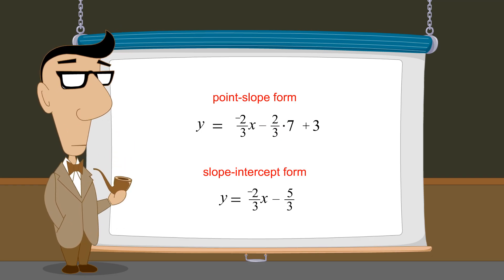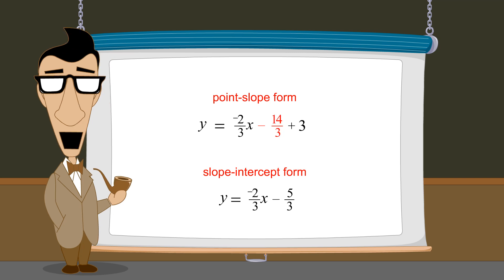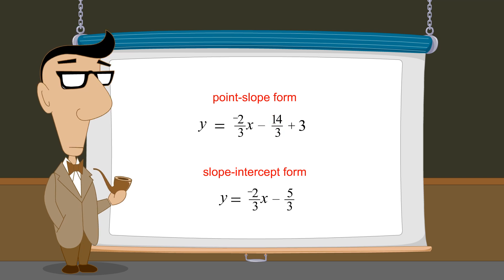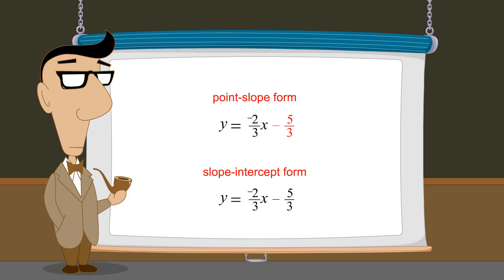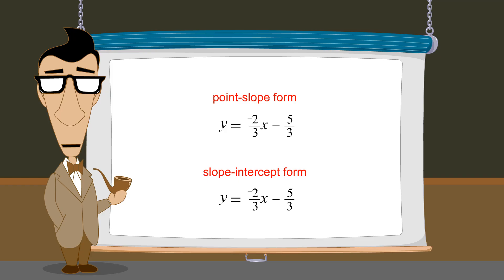We then eliminate the parentheses and multiply negative two-thirds times seven to get negative fourteen-thirds. We can then write three as nine-thirds, and add negative fourteen-thirds to nine-thirds to get negative five-thirds. This makes the forms of these two equations identical.